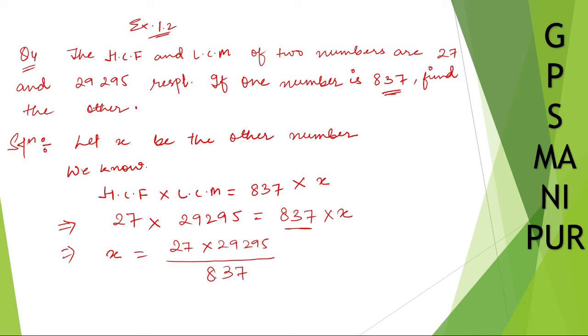I hope it is not complicated for you. Now this number we need to divide. I think we can divide 837 by 27, but let me divide by 3 first. So 3 times 6 is 18, 3 times 7 is 21, and 27 divided by 3 is 9. Same thing here, 3 times 9 is 27. Again I can divide by 3. Let me divide by 9 directly. 9 times 1 is 9, 9 times 3 is 27. So 31. So we have 29295 divided by 31.